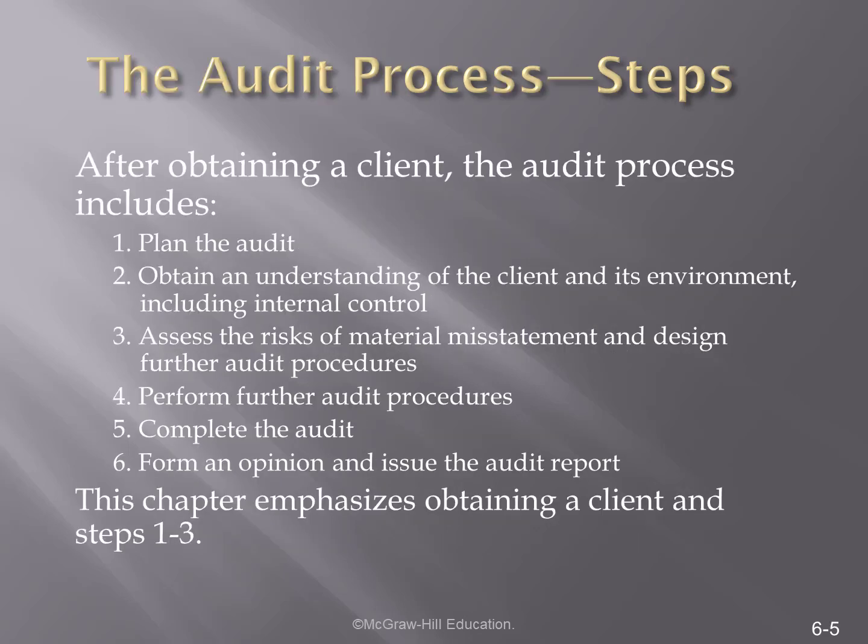Once we have established the client, the complete audit process is what you see here. We plan the audit, we obtain an understanding of the client and its environment in our assessment of material risk. We design procedures based upon this assessment, perform further audit procedures, complete the audit, form an opinion, and issue the audit report. This is the complete process, and we'll talk about this throughout these lectures, but this chapter is primarily focusing on the first three elements: planning the audit, understanding the client, and assessing the risk of material misstatement.